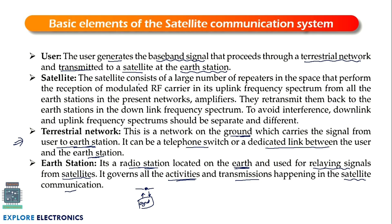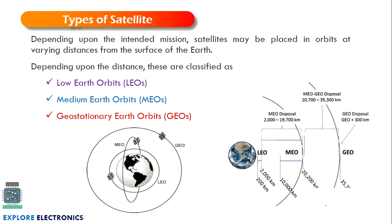The satellite consists of a large number of repeaters. It performs the reception of modulated RF carriers at the uplink frequency spectrum from all earth stations, then uses amplifiers and retransmits them back to the earth stations in the downlink frequency spectrum. To avoid interference, the downlink and uplink frequency spectrums must be separate — just as in mobile communication where uplink and downlink frequencies are kept separate to prevent interference.